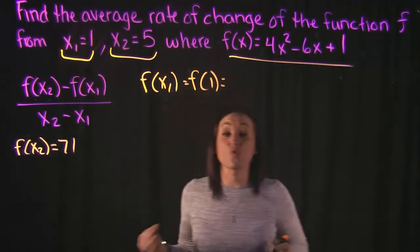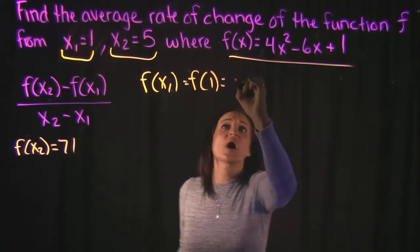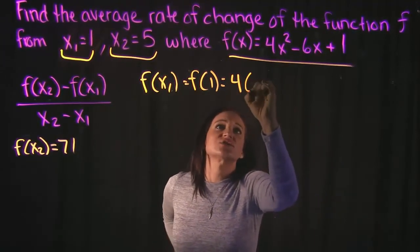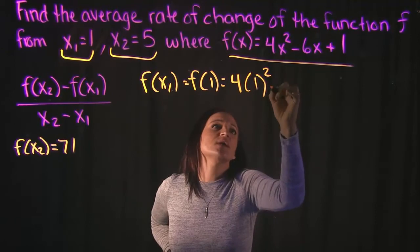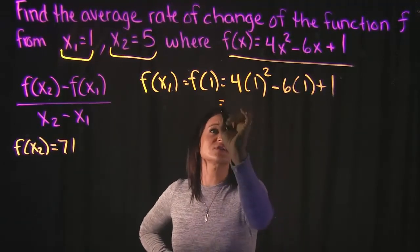So we're really finding f(1) here. We're going to do the same thing, except now we're plugging in 1 for all of the x's. So that means that a 1 is going to go here, and then the 1 is also going to go here. So squaring first,